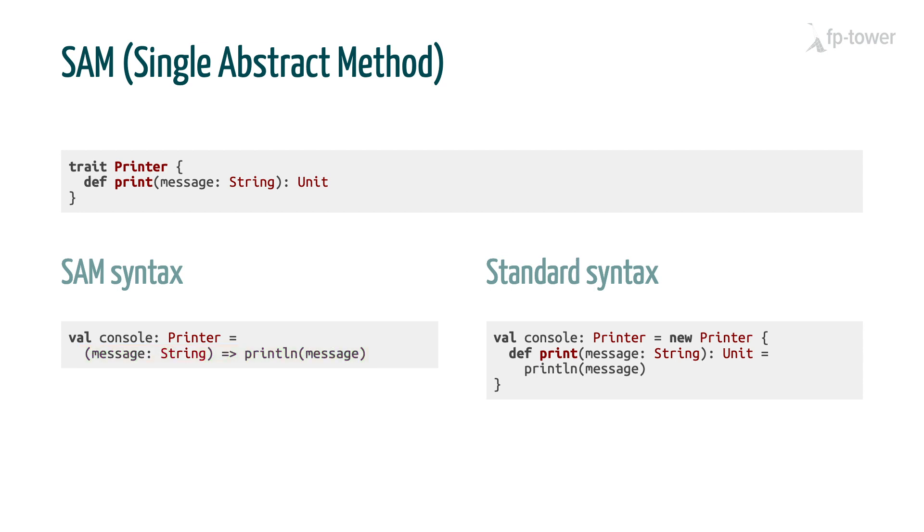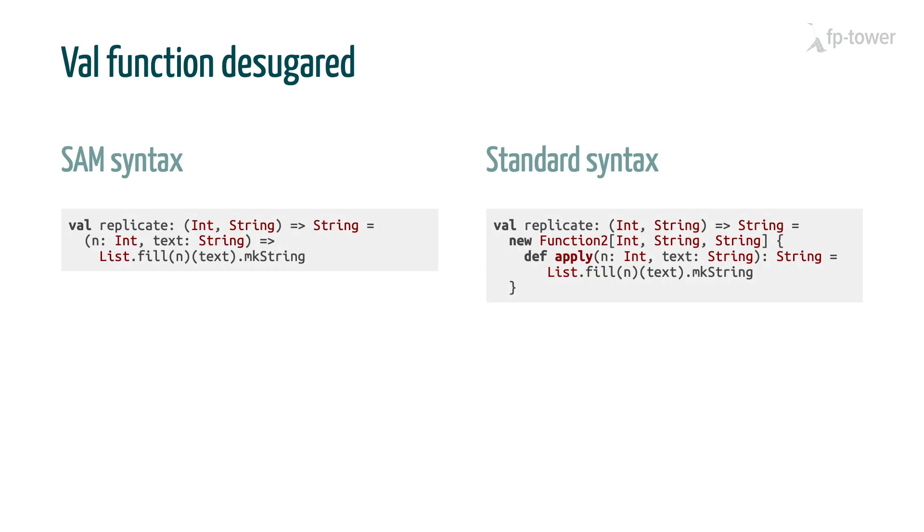So now if we come back to replicate, it starts to make sense why val functions are defined this way. The code you see on the screen is just the SAM syntax for function 2. And we can use it, because function 2 has only one abstract method, apply.